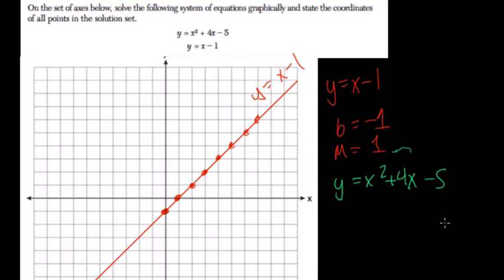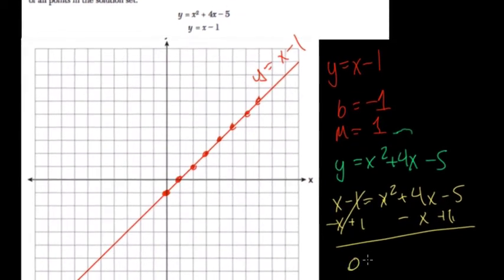We want to know when does this quadratic equal the line. So that means at some point this is going to equal the line, so we set them equal to each other. When does x minus 1, the line, equal x squared plus 4x minus 5? It's generally a good idea to get everything to one side here. So, minus x plus 1, and then this equals 0, equals x squared plus 3x, and then negative 5 plus 1 is negative 4.